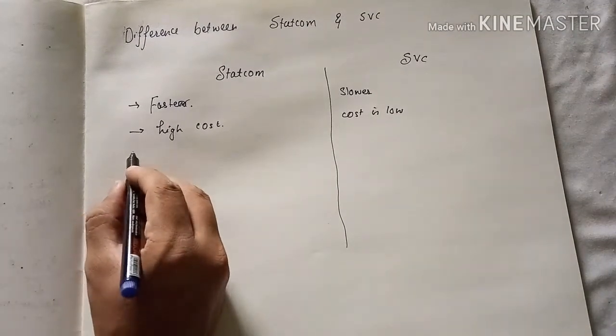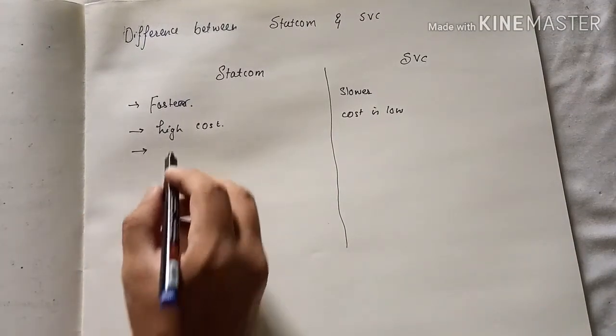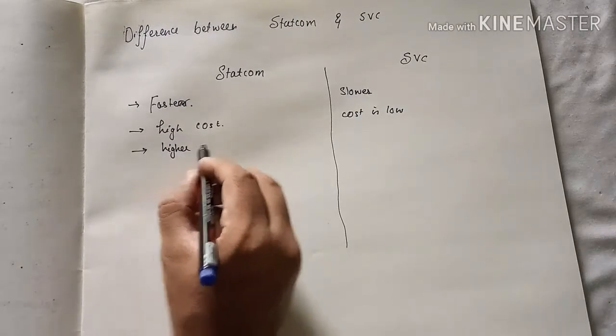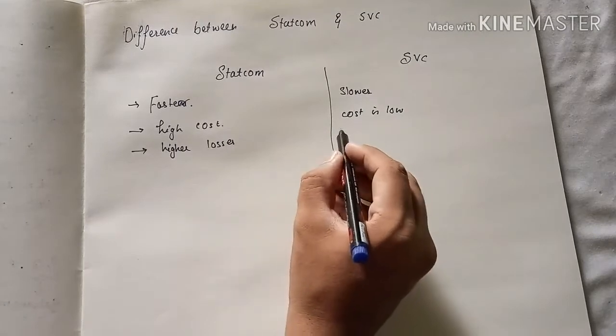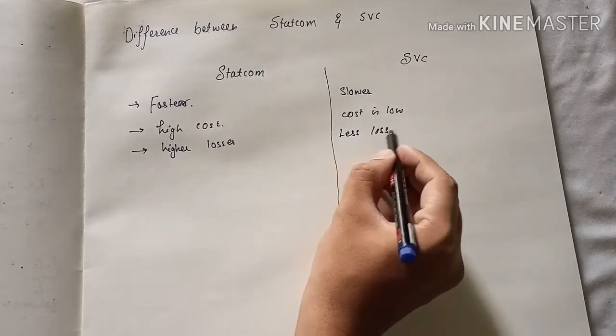The third difference is that in STATCOM the losses are higher, and in SVC it has less losses.